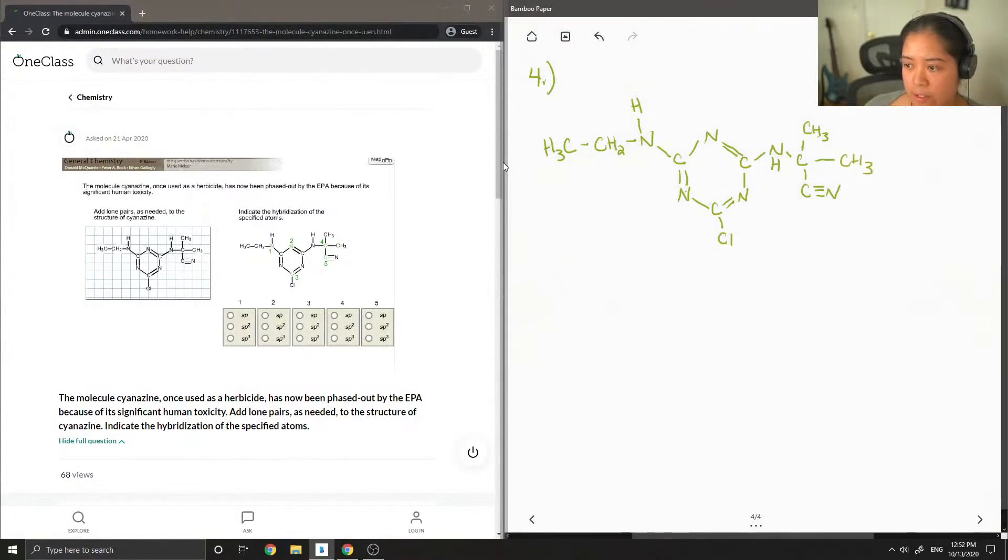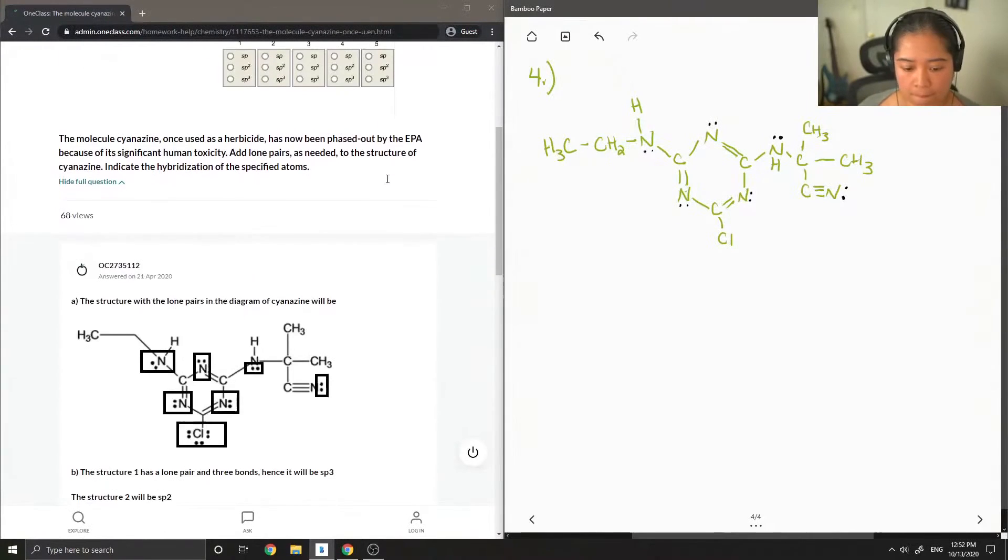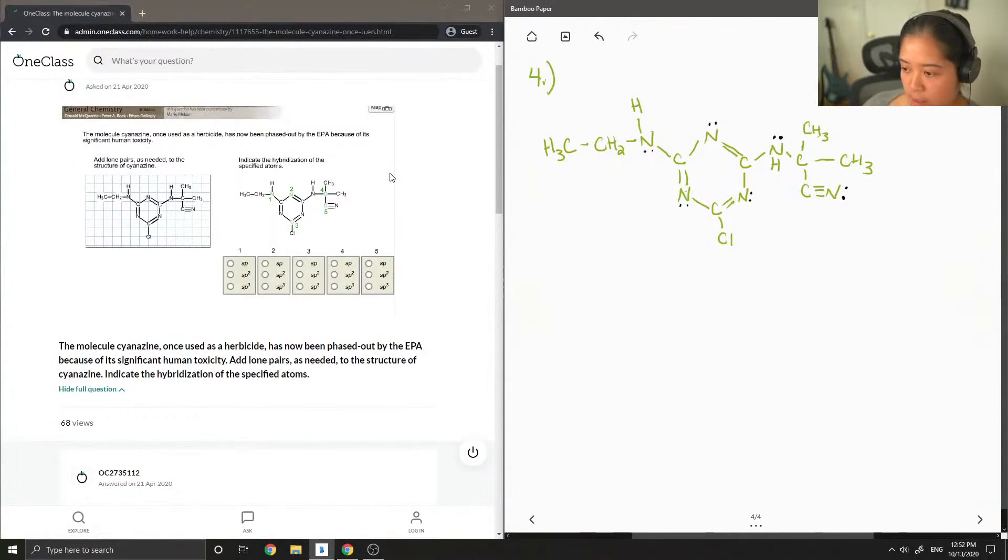And the first part of the question wants us to add lone pairs, so I'm just going to add them for our nitrogen groups, just give lone pairs all around. So that's for all of the nitrogens, I'll write it all for the chlorine as well. So that looks about right.